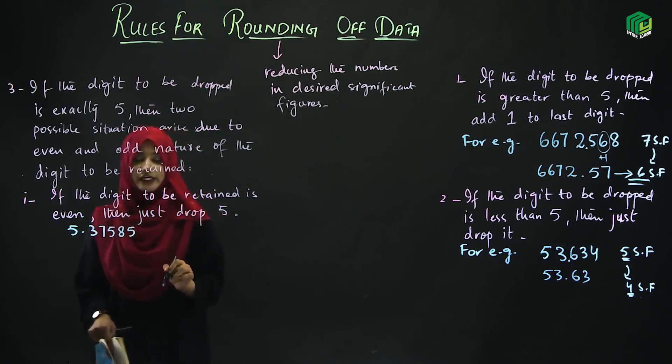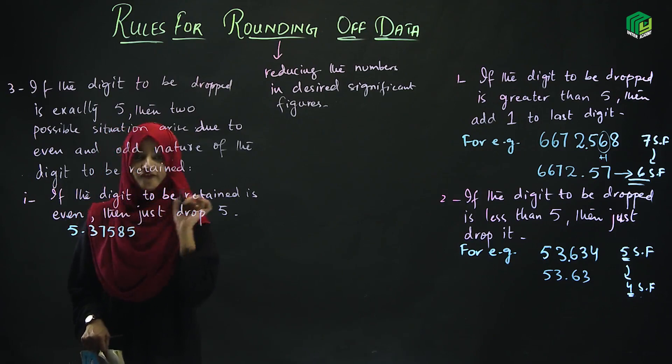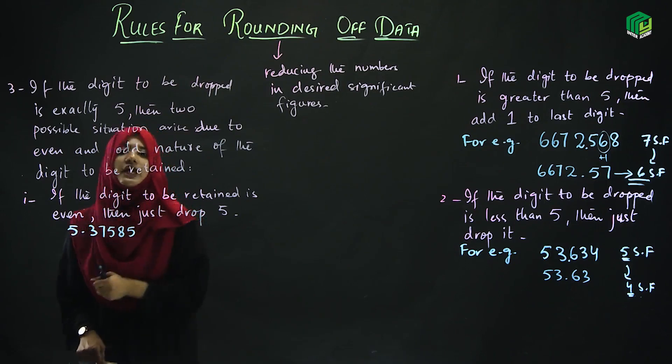Let's give an example. How many significant figures are there? 1, 2, 3, 4, 5, 6 significant figures. And the digit to be dropped is 5. So the number before it is 8, which means it is even.